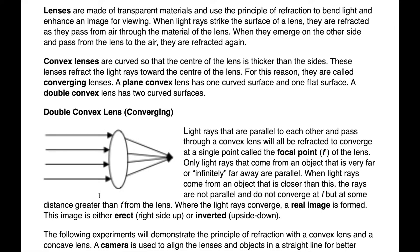A convex lens is what's used in a camera. It's curved and the center of the lens is thicker than the sides. These lenses refract light rays towards the center of the lens — for this reason they're called converging lenses. A plain convex lens has one curved surface and one flat surface; a double convex lens has two curved surfaces. In cameras and in your eye you actually have a double convex lens, and they converge parallel light rays to a single point called the focal point.